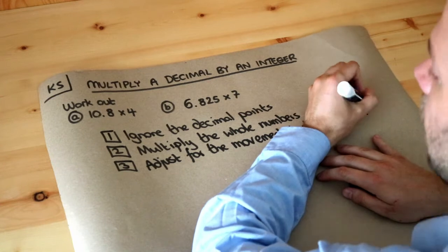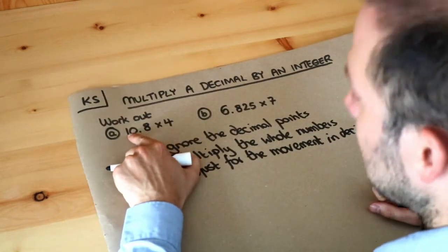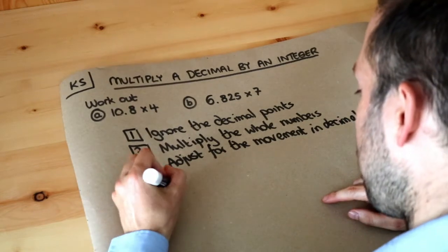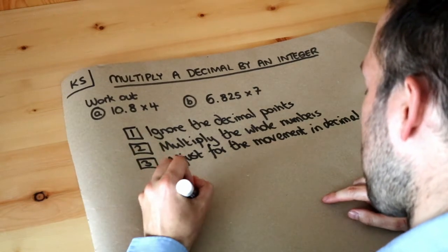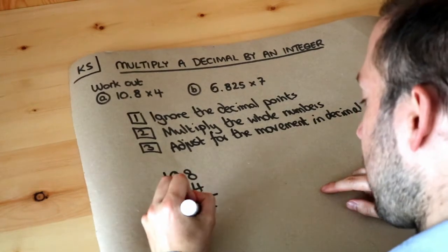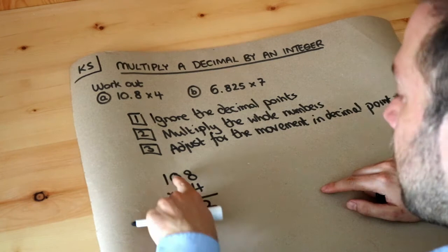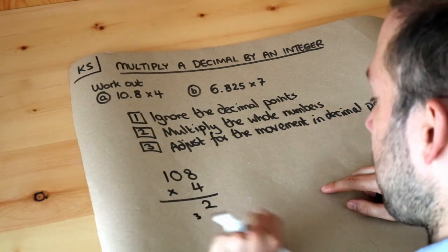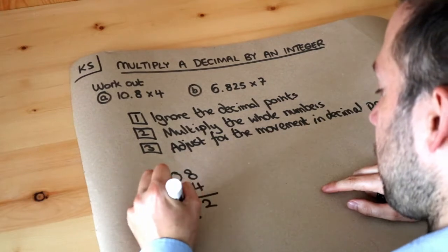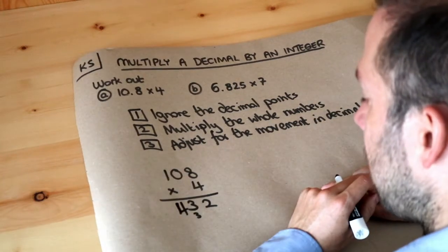If I ignore the decimal point here, that's just 108 times 4. So 8 times 4 is 32, put the 2 there, carry the 3. 0 times 4 is 0, plus the carry 3 is 3. And 1 times 4 is 4. So we get 432.